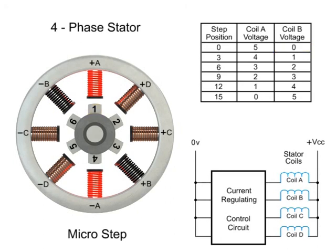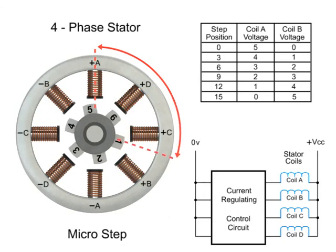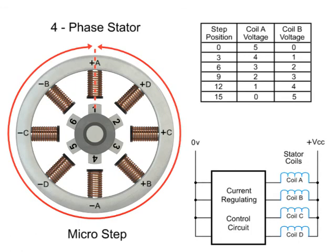Reducing the voltage to coil A and increasing voltage to coil B, the rotor will begin to rotate in a clockwise direction and continue until the voltage is 0 at coil A and 5 at coil B. This process continues at all coils within the stator to provide accurate positioning. As you can see in this example, 120 steps are required to make a full rotation at 3-degree increments.